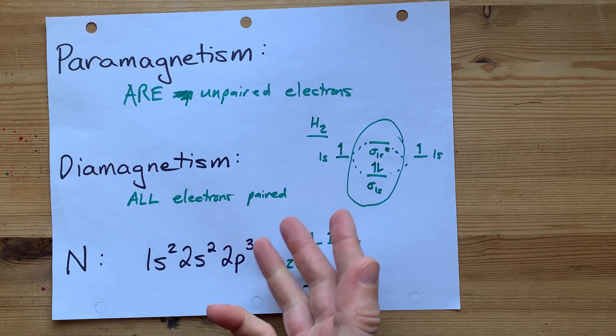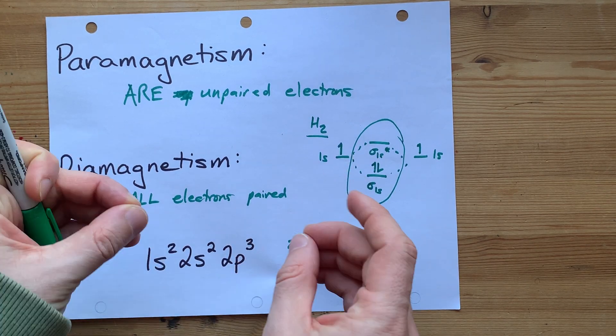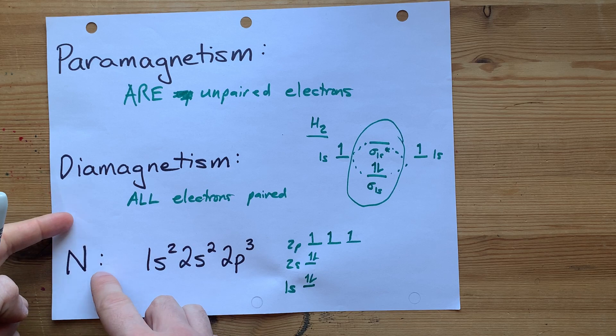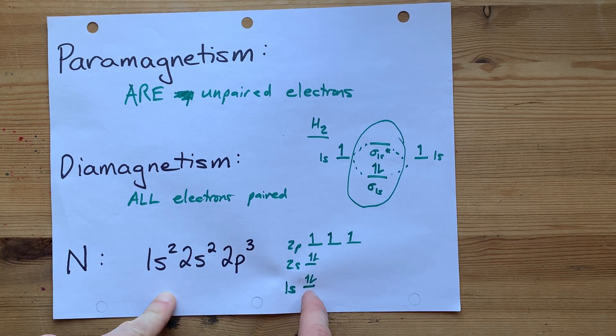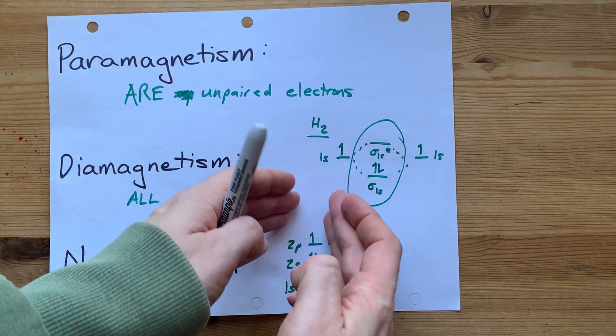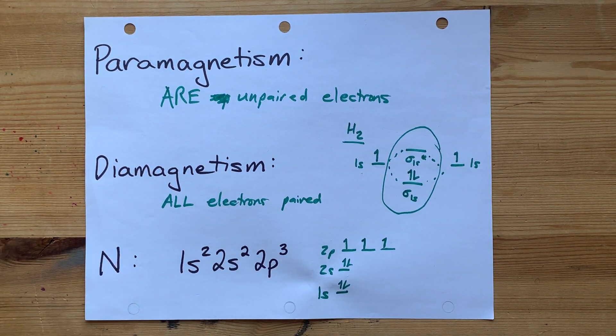Whereas N on its own or even H on its own is paramagnetic, it's all about figuring out if all the electrons are paired. For single atoms, you can use an electron configuration diagram. For molecules, you'll need to know a little bit of molecular orbital theory. Thanks for being with me and best of luck.